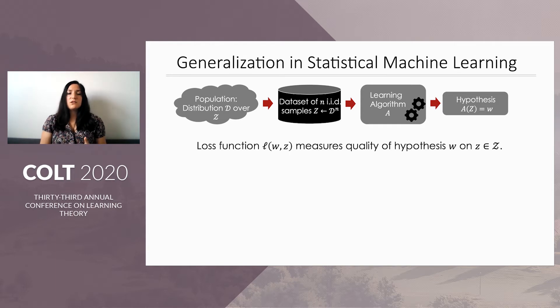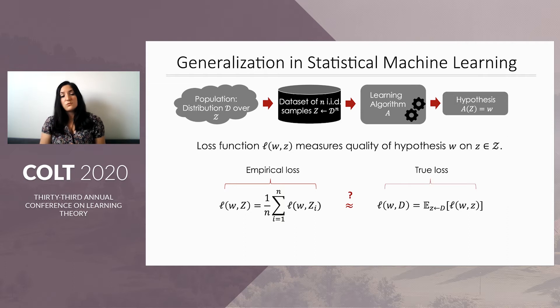The way we measure how good a model W is is through a loss function, which we call L. The algorithm only sees the empirical loss, which is the average over the loss over each point of the sample set. On the other hand, what we really care about is the true loss, which is the expected loss sampled from the population from distribution D.